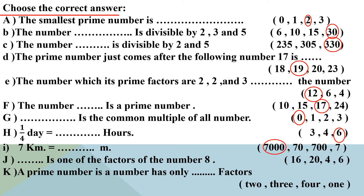After that: which number is a factor of 8 — 16, 20, or 4? Is 16 a factor of 8? No. Is 20? No. Is 4? Yes — because 4 × 2 = 8. So 4 is one of the factors of number 8.